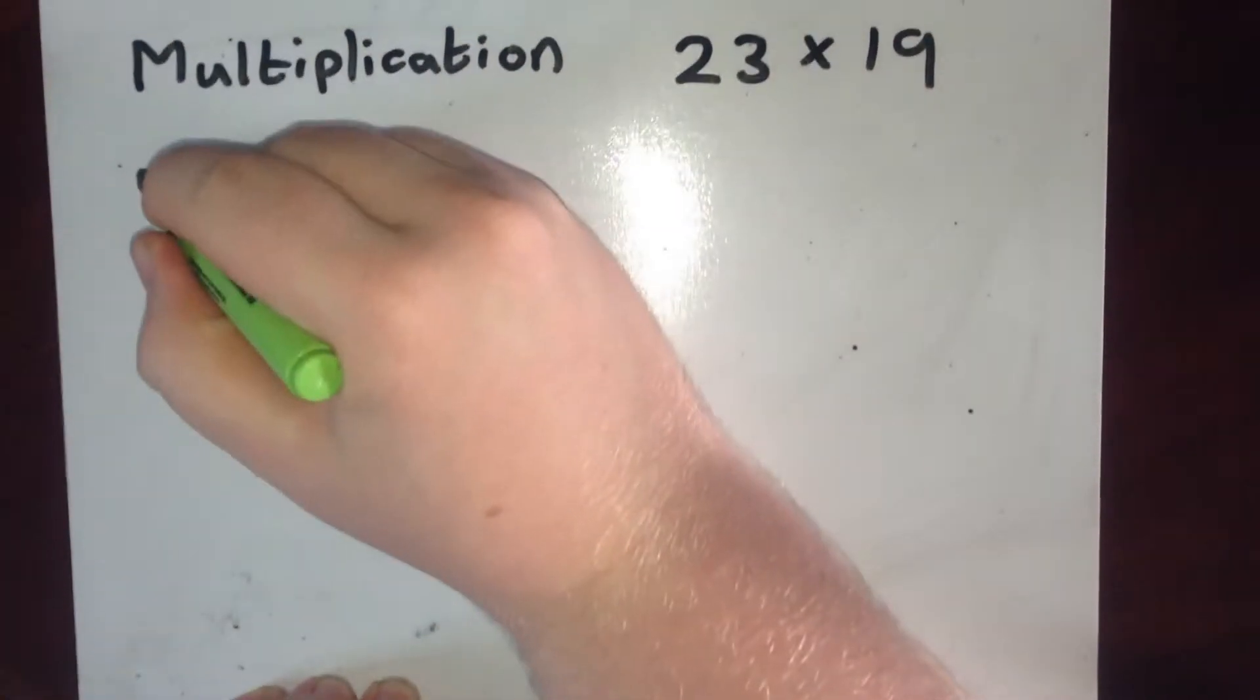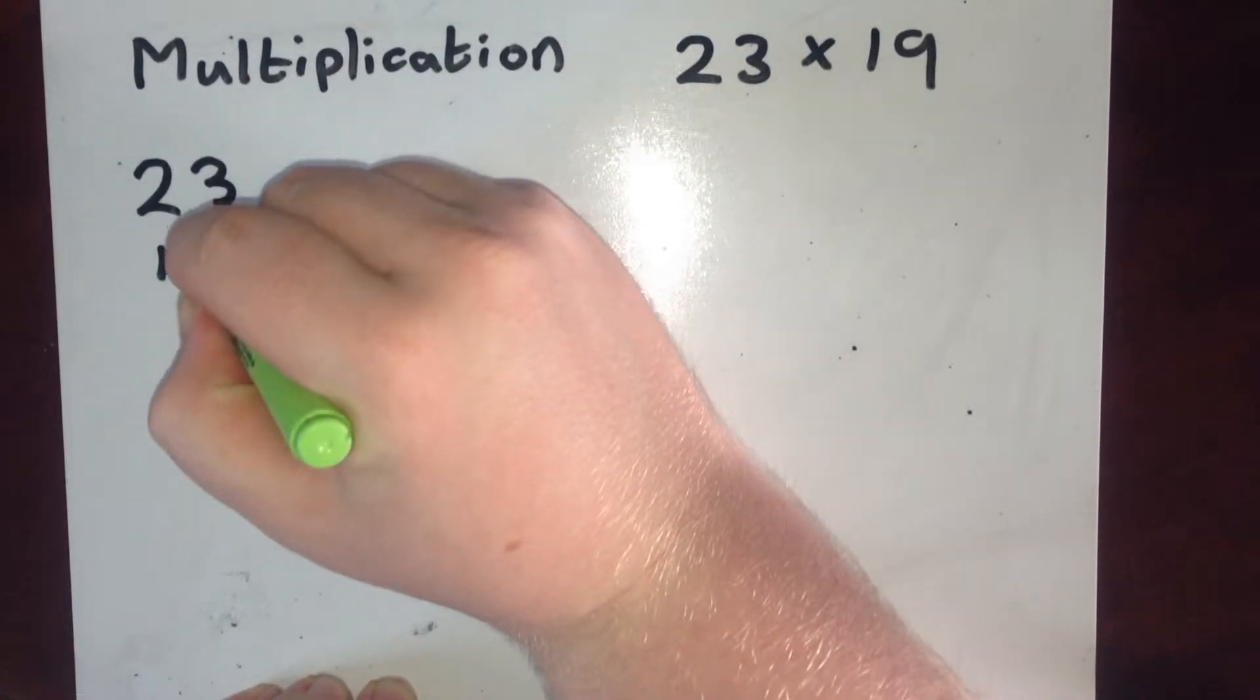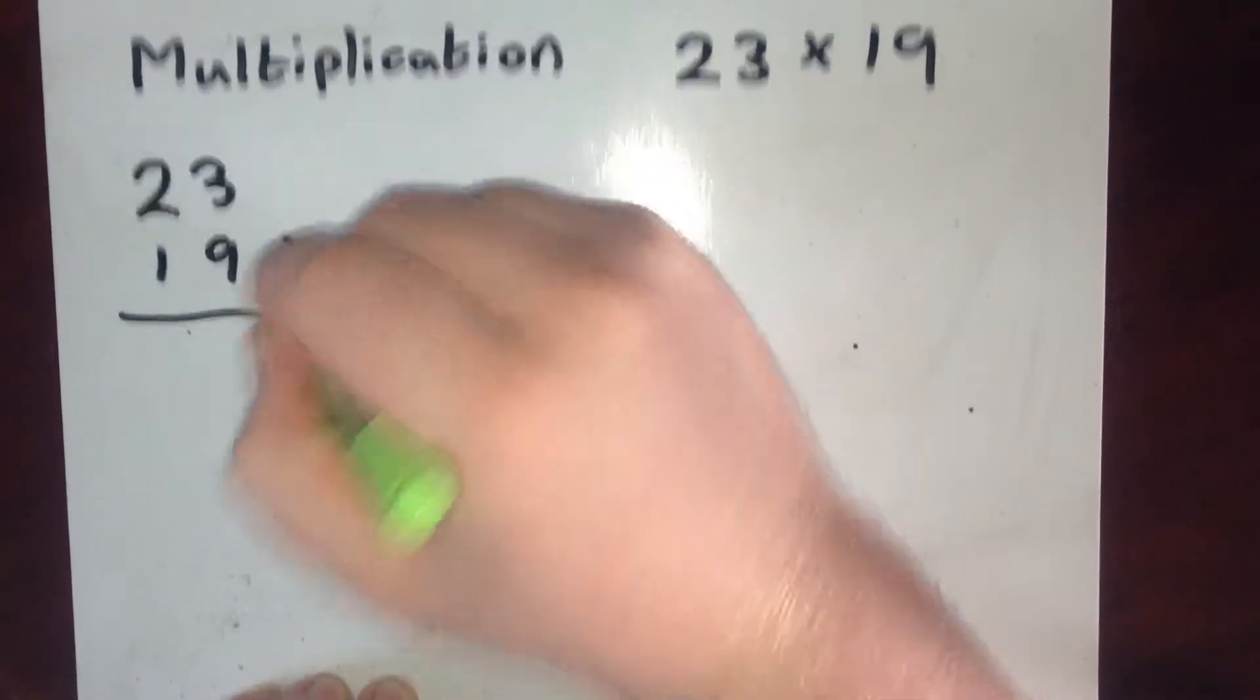So I'll start. I'm doing the long multiplication method first. So this is 23 multiplied by 19.